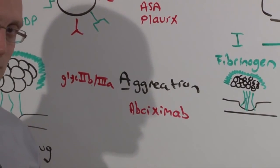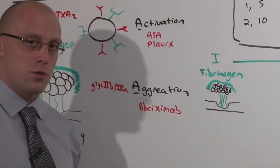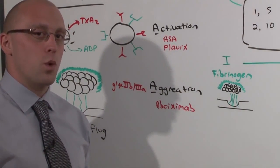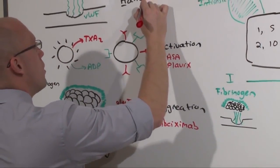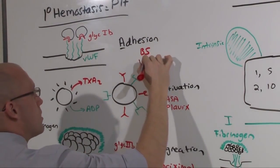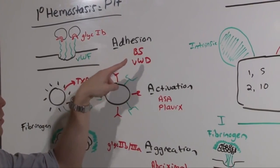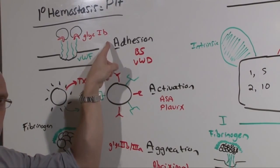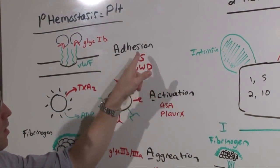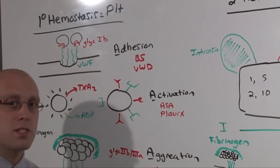Von Willebrand disease, Glansman's thrombastenia, and Bernard-Soulier are all congenital disorders of primary hemostasis. Bernard-Soulier has 1b in it, as does glycoprotein 1b. Von Willebrand disease is a deficiency of von Willebrand factor. If you don't have glycoprotein 1b, and you don't have von Willebrand factor, you don't have adhesion. These are congenital disorders which lead to increased bleeding risk. Bernard-Soulier has 1b. Von Willebrand disease is easy to remember.